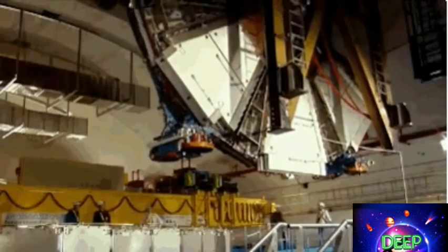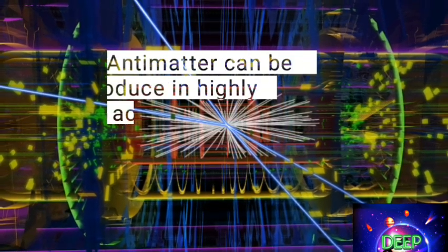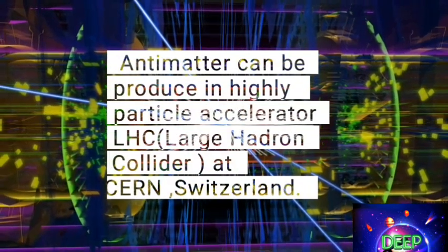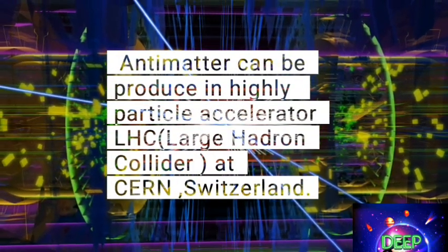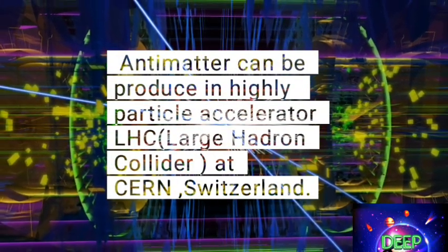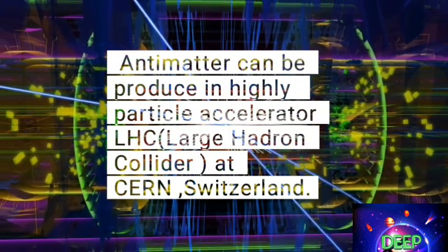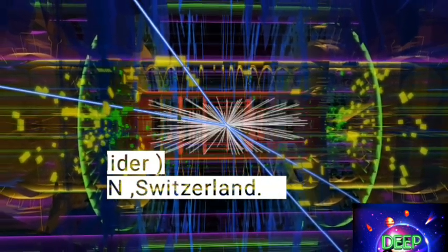One of the greatest challenges in physics is to figure out what happened to the antimatter, or why we see an asymmetry between matter and antimatter.